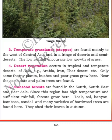Next comes the monsoon forest, which is found in South and Southeast Asia. Since the region has high temperature and sufficient rainfall, forests grow here. Trees like teak, sal, banyan, bamboo, sandalwood, and many varieties of hardwood trees are found here. They shed their leaves in autumn.